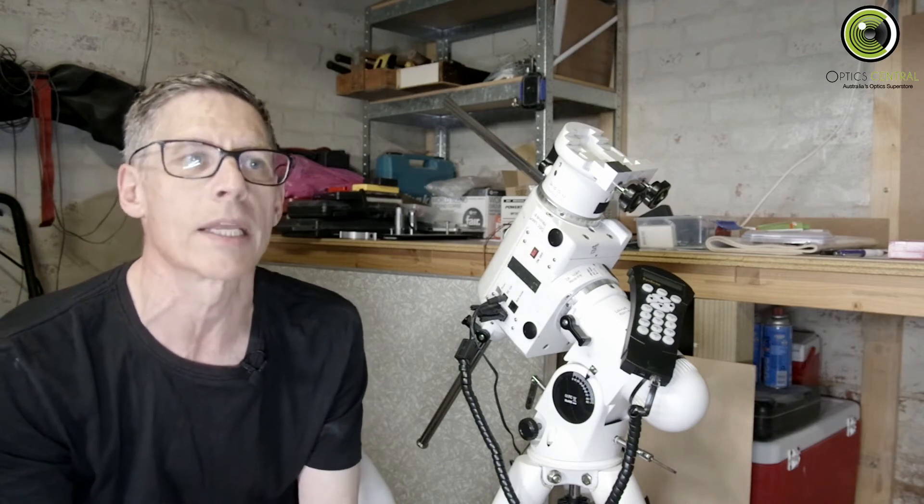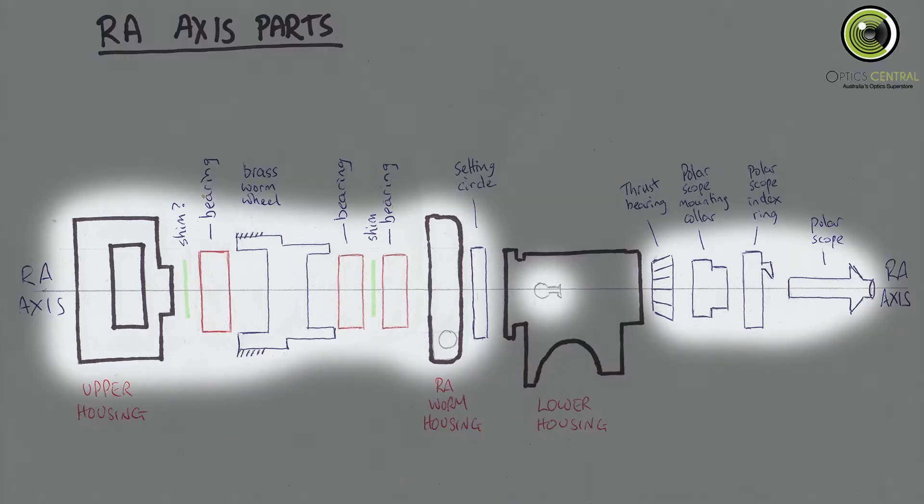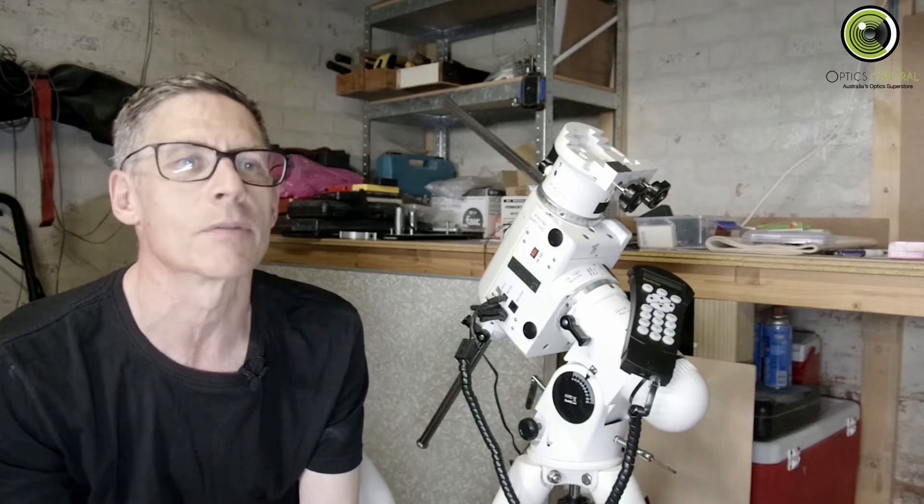In this stage, we're going to remove the RA axis and separate the RA worm housing so we can install the belt. Here are the parts we'll be dealing with in the RA axis, and we'll be removing pretty much all of them. We'll end up with the RA worm housing separated so we can install the belt.